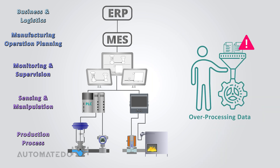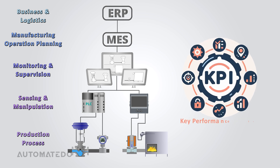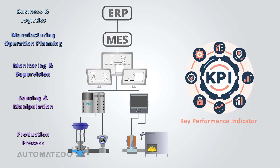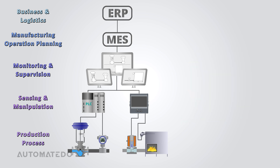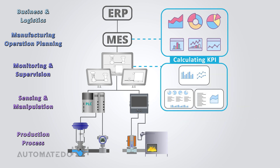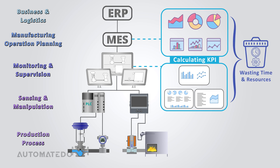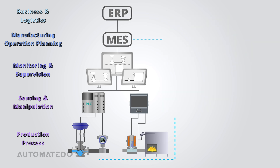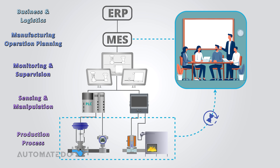Fourth, over-processing data is a challenge — KPIs evaluating manufacturing efficiency may be processed initially in SCADA and then rechecked by the production department, wasting time and resources and risking errors or inconsistencies. Fifth, the automation pyramid faces the issue of delayed information updates, making it difficult for management to act quickly. Without timely access to key data, response times are negatively impacted.